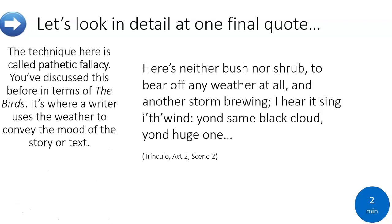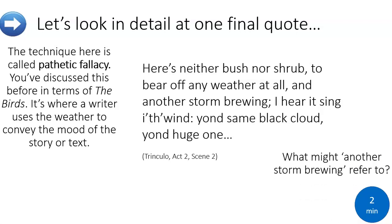Of course, we're looking here at pathetic fallacy — we've discussed this before in terms of the birds, and you will have seen it in examples of poetry and other extracts used in class. It's where the writer uses weather to convey the mood of the story or text. Now there might literally be another storm coming — because of course this play is the Tempest — but there's also a sense that something else might be represented by the storm. Take two minutes to think about what that might be.